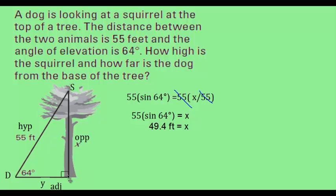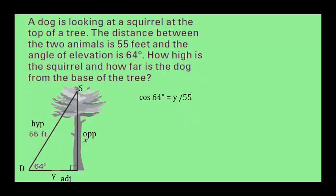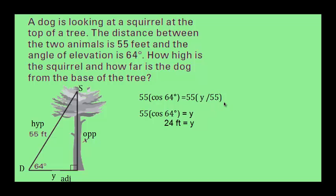We use a different ratio to find the distance the dog is from the tree — cosine, because it's adjacent over hypotenuse. The cosine of 64 degrees equals the adjacent over the hypotenuse, or Y over 55. Multiplying both sides by 55 gives us 55 times the cosine of 64 degrees equals Y. So the distance the dog is from the tree is approximately 24 feet.